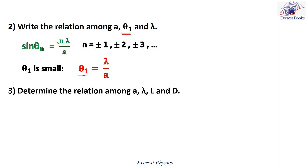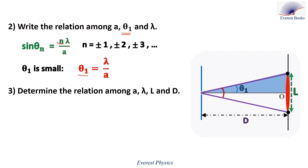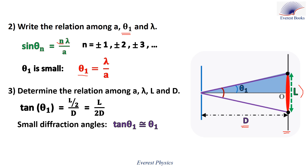Number three: determine the relation among A, lambda, L, and D. Looking at the figure, D is the distance between the slit and the viewing screen, and L is the width of the central fringe. From the blue right-angled triangle, tangent theta 1 equals (L/2) over D, which equals L over 2D. Since the diffraction angles are small, tangent theta 1 is approximately equal to theta 1. Therefore, theta 1 equals L over 2D.